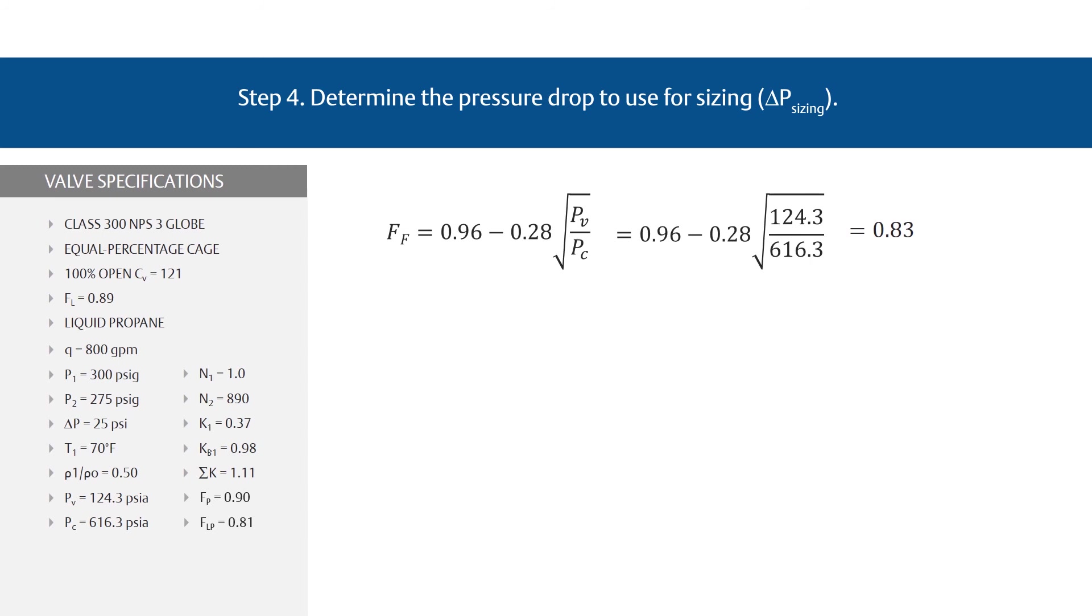The choked pressure drop, delta P sizing, is found using the standard delta P choked equation. Enter your variables for a result of 171 PSI. Since the actual pressure drop is lower than the choked pressure drop, we know that delta P sizing equals delta P, which equals 25 PSI.